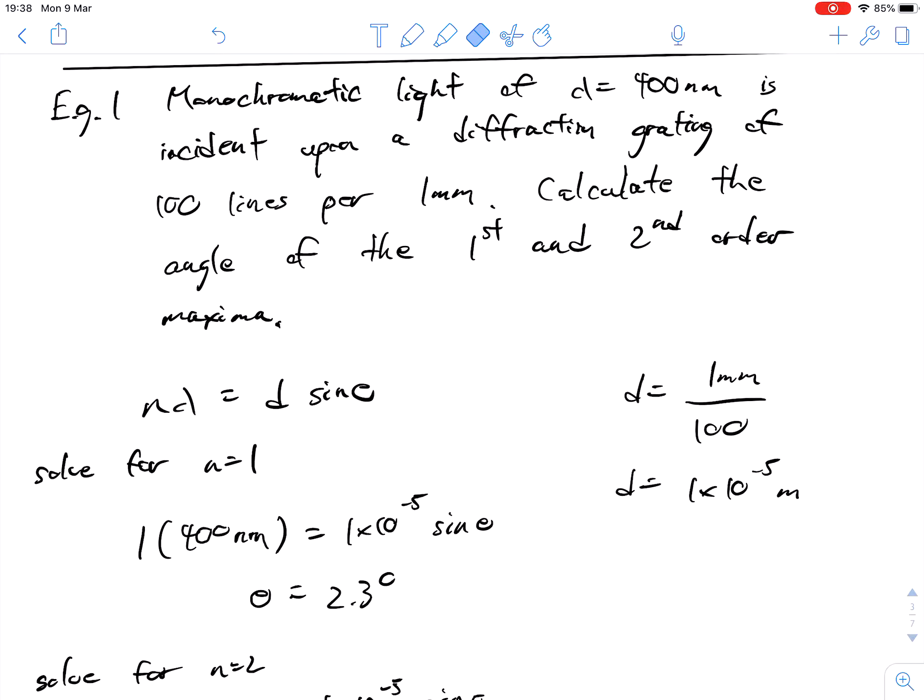We've got monochromatic light of lambda 400 nanometers, that's essentially red color light, and it's incident upon a diffraction grading of 100 lines per 1 millimeter. So there's a diffraction grading, it's 1 millimeter, there's 100 lines inside of that, and we've got some red light going into that.